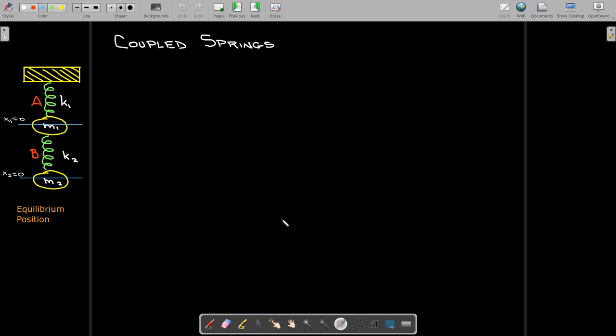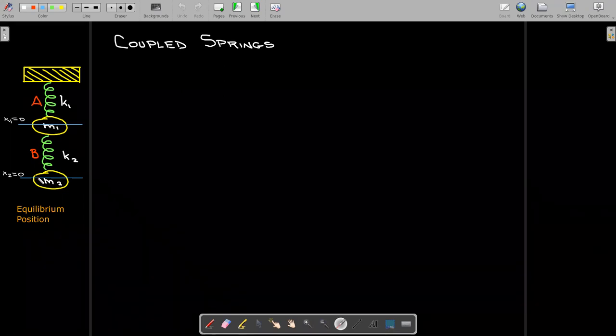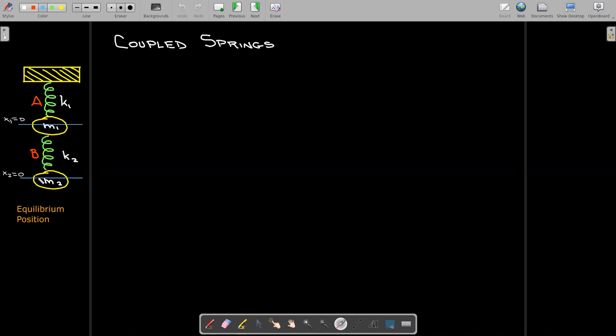So the first system would be if we have coupled springs. The idea is you have some sort of fixed object, you have a spring connected to it with some mass or object at the end of that spring, and then you connect another spring and another mass at the bottom of the first mass. That mass is going to stretch the springs, and they will reach their equilibrium position where the force of the spring moving up is going to equal the force of gravity pulling down.